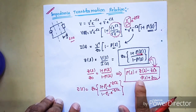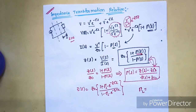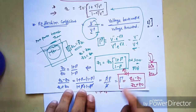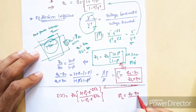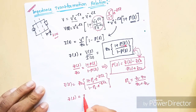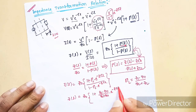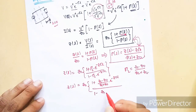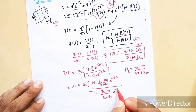Now, I can write ρ_L using the result derived in my previous video by componendo and dividendo: ρ_L equals (ZL - Z0) / (ZL + Z0). I will replace this in the formula. So now Z(l) will be equal to Z0 times (1 + (ZL - Z0)/(ZL + Z0) · e^(-2γl)) / (1 - (ZL - Z0)/(ZL + Z0) · e^(-2γl)).